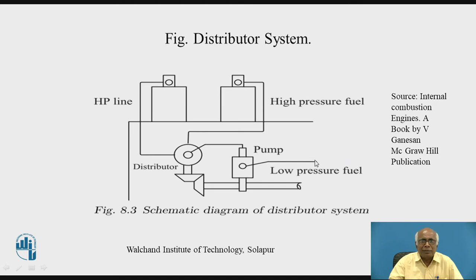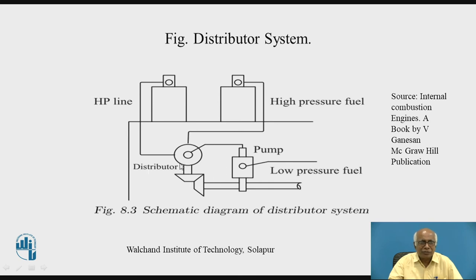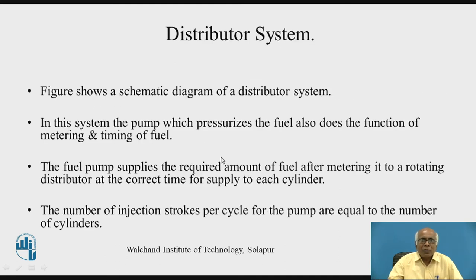Low-pressure fuel comes from the transfer pump to the high-pressure pump. The high-pressure pump supplies pressurized fuel to the distributor, which is common to all cylinders. The distributor does the metering and timing for each cylinder and accordingly sends fuel through individual pressure lines at the correct timing to each cylinder. That is how it is called the distributor system. The number of injection strokes per cycle for the pump equals the number of cylinders — for four cylinders there will be four strokes per cycle, for two cylinders, two strokes.